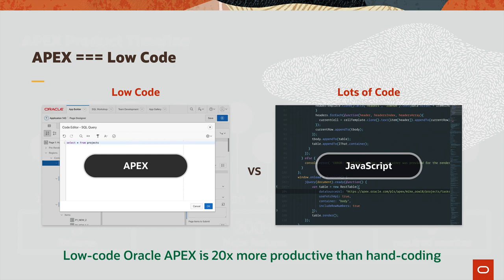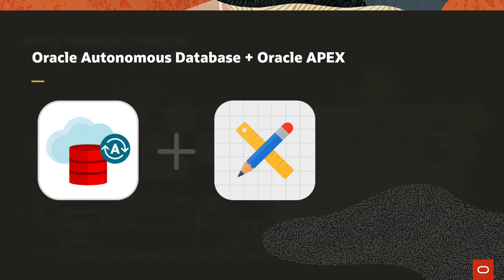Oracle APEX is 20 times more productive than hand coding. In APEX, to build a chart on project data, you'd simply select from the project table versus writing a lot more with JavaScript. With Oracle Autonomous Database and Oracle APEX together, you really have an unparalleled combination of superior data management and proven low-code application development — a pre-configured, fully managed, secured environment to build and deploy applications that lets you take advantage of the data you already have and solve business problems.